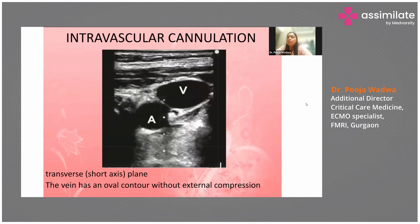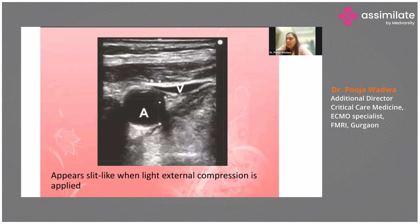Intravascular cannulation using ultrasound is increasingly used in the ICU. In the short-axis plane, you can differentiate artery from vein — the vein has an oval contour and when light compression is applied it compresses to a slit, while the artery is more round.